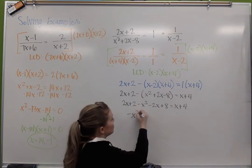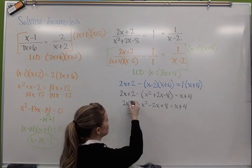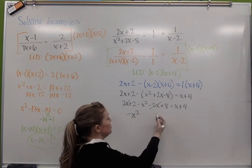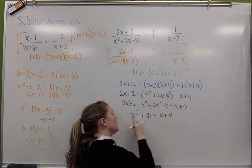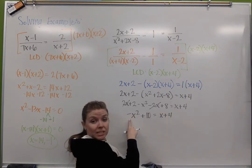Here I'm gonna combine my terms, so I have negative x squared, 2x minus 2x, those are gone. 2 plus 8, I get 10 equals x plus 4.